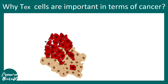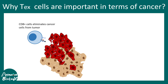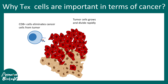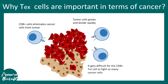Imagine the cytotoxic T cell killing one tumor cell, but by the time it does so, many more tumor cells have aggressively proliferated. How many tumor cells can the CD8 positive T cells kill? After a point they reach saturation and become exhausted.